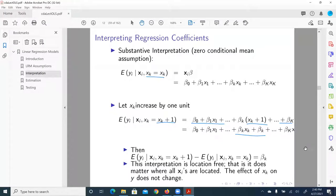Well, for each unit increase in x_k, we expect y increase by beta_k unit. This interpretation is location-free. That is, it does not matter where any of the predictors or independent variables is located. The effect of x_k, a generic variable on y, does not change. So that makes our interpretation pretty straightforward.